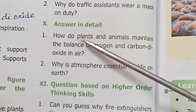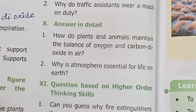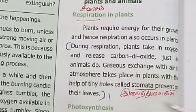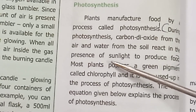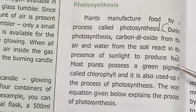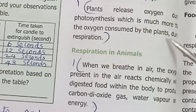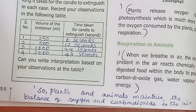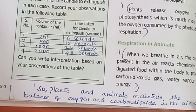Answer in detail, Question 1: how do plants and animals maintain the balance of oxygen and carbon dioxide in air? During respiration in plants, plants take in oxygen and release carbon dioxide. During photosynthesis, plants use sunlight to produce food and release oxygen. Thus, plants and animals together maintain the balance of oxygen and carbon dioxide in the air.